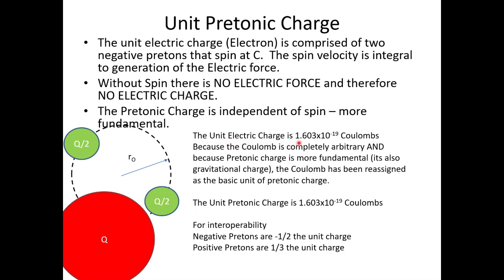In the legacy system, the unit of electric charge is 1.603 times 10 to the negative 19 coulombs. Because the coulomb is completely arbitrary and pre-tonic charge is more fundamental — it is also the gravitational charge — we are going to repurpose the coulomb as the basic unit of pre-tonic charge. So the unit pre-tonic charge is also 1.603 times 10 to the negative 19 coulombs. That makes the pre-tonic charge of each pre-ton in the electron one half, meaning the electron SOSOP is made up of two half-unit charges, summing to the unit charge — keeping everything compatible with the past.